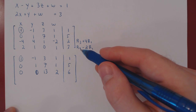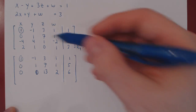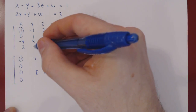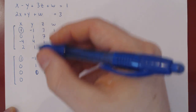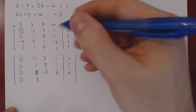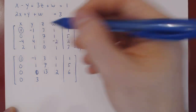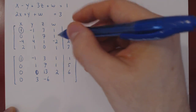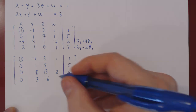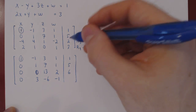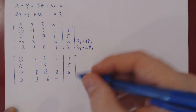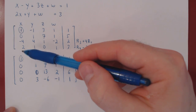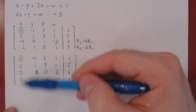Second row operation, row four minus two row one: 2 - 2 = 0; 1 - 2×(-1) = 3; 0 - 2×3 = -6; 1 - 2×1 = -1; 3 - 2×1 = 1. We have our leading one in the leftmost column top row, with the entries below killed.